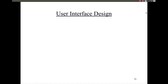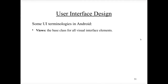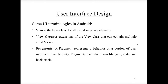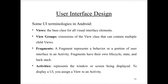To design a user interface in Android, you need to understand views and view groups. Views are the base class for all visual interface elements. View groups are collections of multiple views as children. Fragments represent a behavior or portion of the user interface within an activity, and they have their own lifecycle state and back stack. Activities represent the window or screen being displayed — to display a UI, you assign a view to an activity.